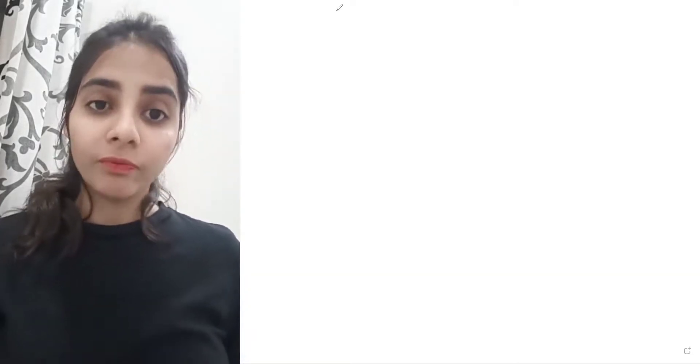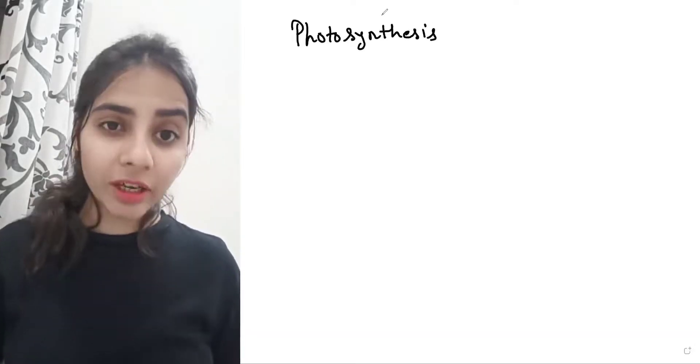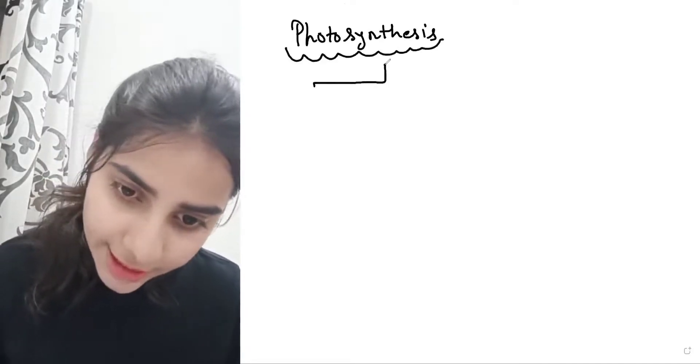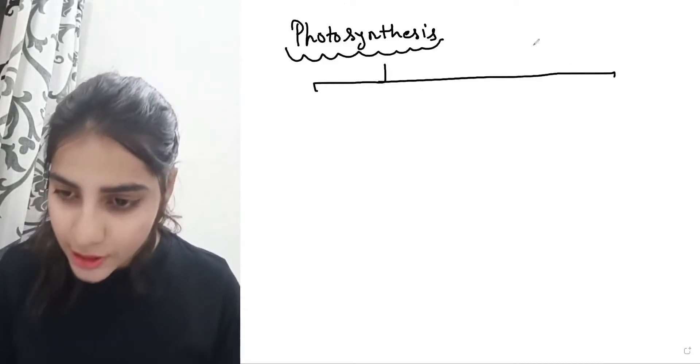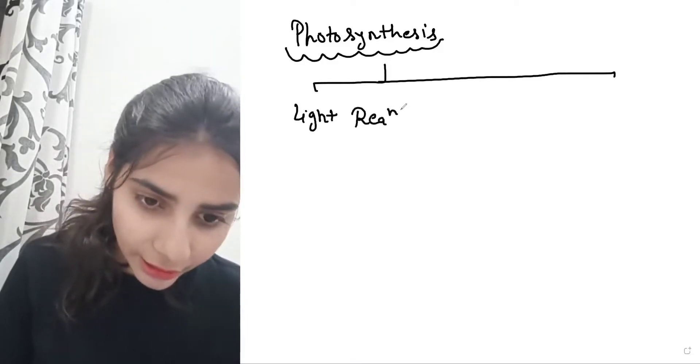So photosynthesis is the process where glucose is formed in the presence of light. The solar light from the sun is utilized and we get glucose, which is performed by plants. Now when we talk about photosynthesis, the process is divided into two reactions: the first is the light reaction and the second is the dark reaction.